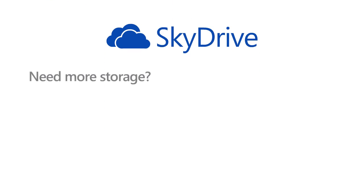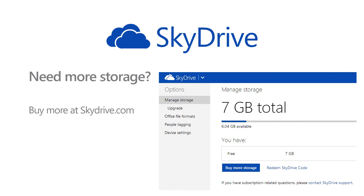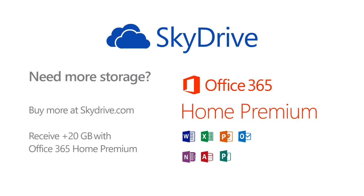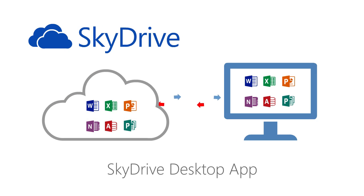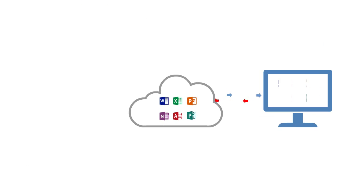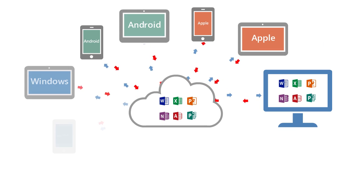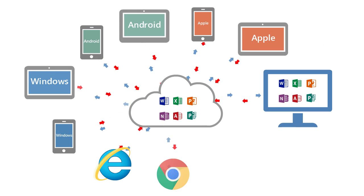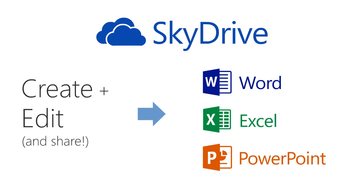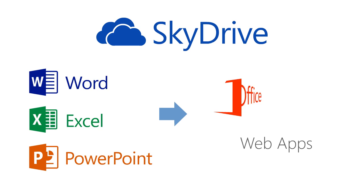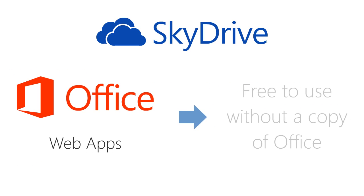If you need more storage, you can purchase it through SkyDrive.com or with an Office 365 Home Premium subscription. You can sync your SkyDrive files with your computer using the SkyDrive Desktop Sync tool, as well as access them through apps on Apple, Android and Windows Mobile devices on most web browsers. SkyDrive also lets you create and edit Word, Excel and PowerPoint documents from within the browser. These are called Office Web Apps and they're free to use even if you don't have a copy of Office.